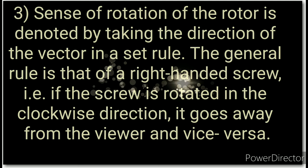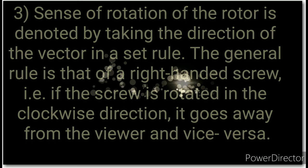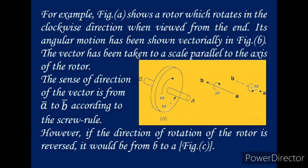The right-hand screw rule means that if a screw is rotated in the clockwise direction, it goes away from the viewer, and vice versa. In the figure, a rotor rotates in the clockwise direction when viewed from end A. Its angular motion is shown in figure B. The vector is drawn to scale parallel to the axis of the rotor, and its sense is from A to B according to the screw rule. If the direction of rotation is reversed, it would be taken from B to A.